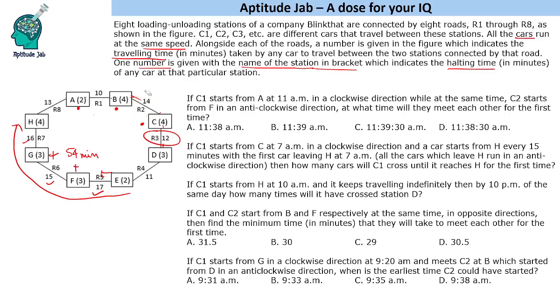The first question says, if C1 starts from A at 11 am in a clockwise direction and C2 starts from F in an anti-clockwise direction at the same time, what time will they meet each other for the first time? So C1 starts from A and C2 starts from F. Do not count 2 because it is when a car reaches A and halts. Since the car is starting from A, we will not count 2 and similarly, we will not count 3 here.